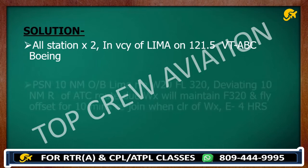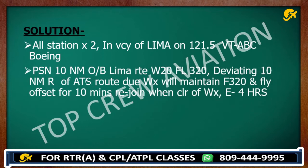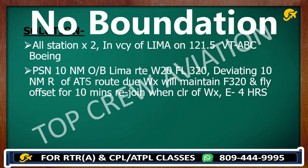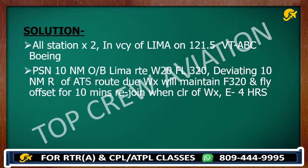Then: call sign Victor Tango Alpha Bravo Charlie, type of aircraft Boeing, position 10 nautical miles outbound Lima, route Whiskey 20, flight level 320, deviating 10 nautical miles right of ATS route. Due to weather, will maintain flight level 320 — level change not required up to 10 nautical miles. Fly offset for 10 minutes — this is the approximate time for deviation, could be 10 or 15 minutes, completely up to you. Rejoin when clear of weather.